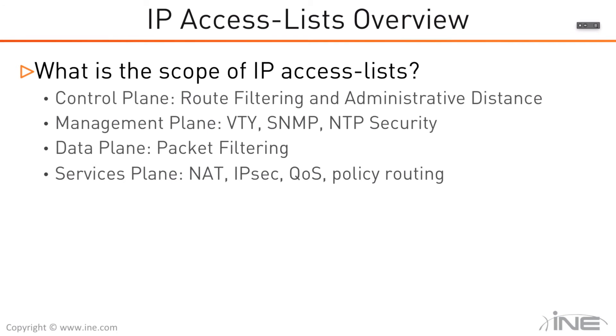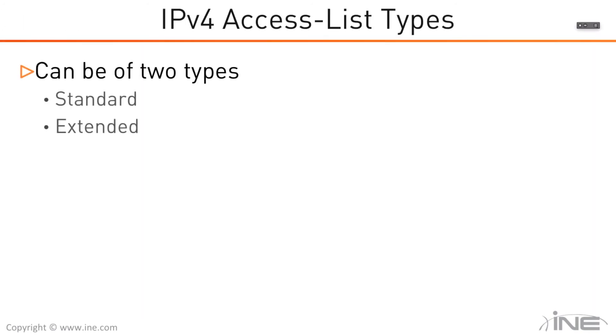Regardless of the scope — regardless of which plane you want to use the access list for — ACLs can be of two types: standard and extended. We'll also speak about variations and special ACLs, but primarily we have two types: standard and extended.